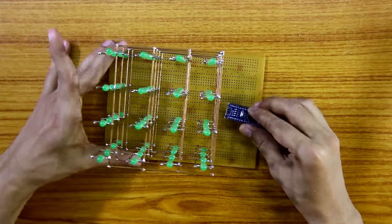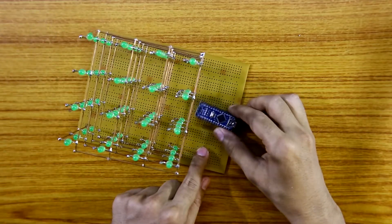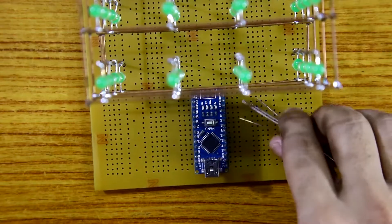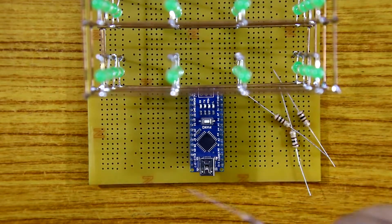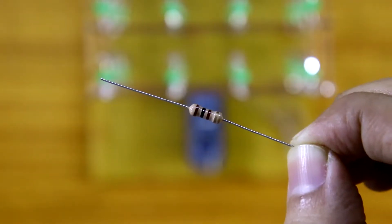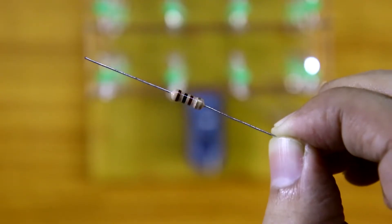Now we have to solder the Arduino board. I'm using Arduino Nano, 100 ohms resistor. These are half watt 100 ohms resistor. We need four of them.